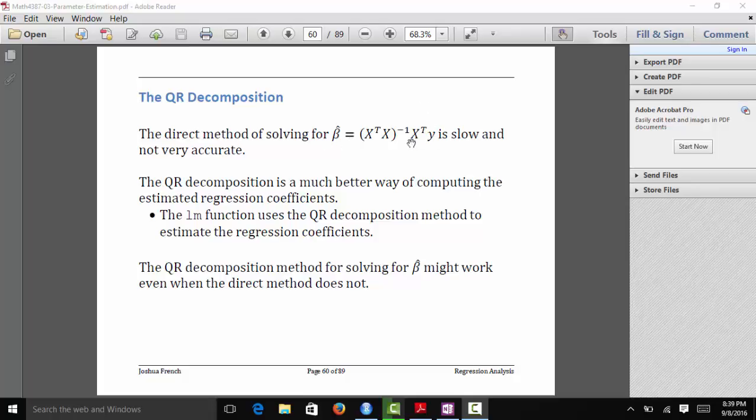So essentially if you try to invert the matrices or multiply them together, you start getting errors and R is not able to do it like it's supposed to, whereas the lm function which is based on the QR decomposition is much more stable, it's faster, it's efficient, and so you're actually able to still estimate the regression coefficients in that particular setting.